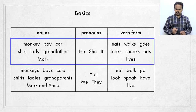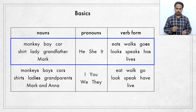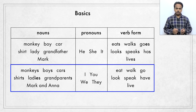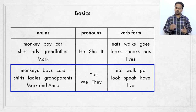With singular nouns such as monkey, boy, car and so on, and with the pronouns he, she and it, we add S to the verb in the present tense. Monkey eats, boy walks, he goes, she speaks, etc. With plural nouns and with the pronouns I, you, we and they, we don't add S to the verb. Now, I and you are not plural pronouns, it's just a rule that with I and you, we don't add S to the verb.